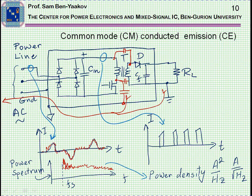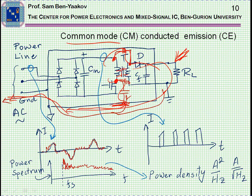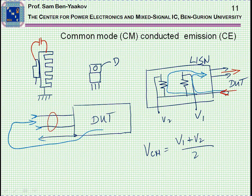Let's move now to the other type of emission, which is called common mode emission. The origin of this noise is as follows: in the same power supply shown before, we have to take into account some parasitic capacitances between the two parts of the coupled inductor — interwinding capacitances. And then there is a capacitance between this point and ground. Consequently, there is some ripple current, a high frequency component, that penetrates through this capacitor, moves toward ground, and eventually ends up at the ground wire of the AC line.